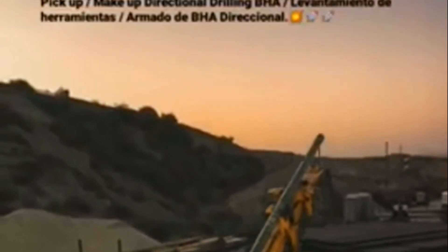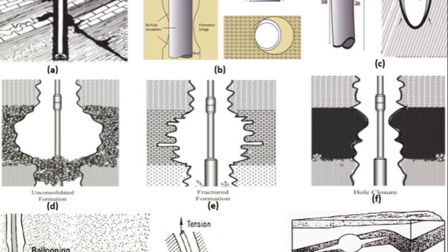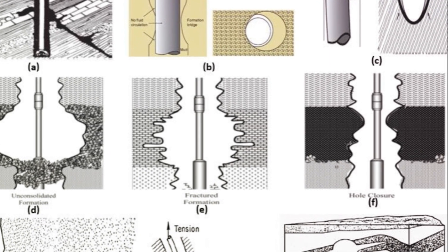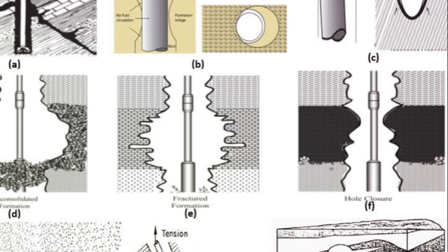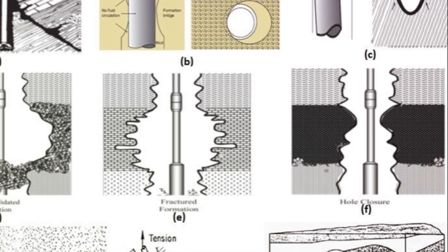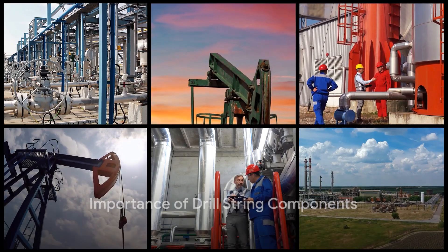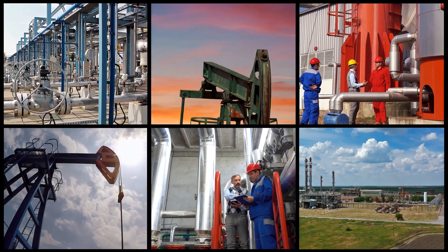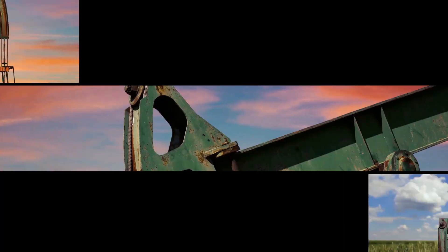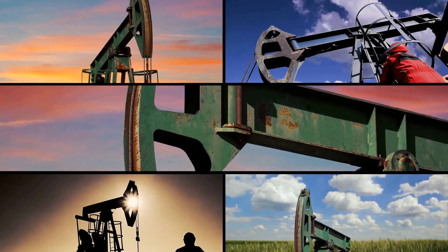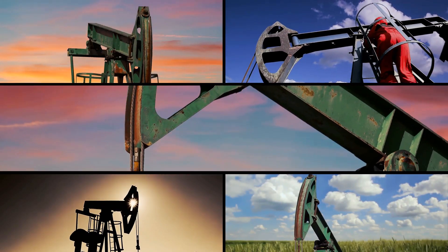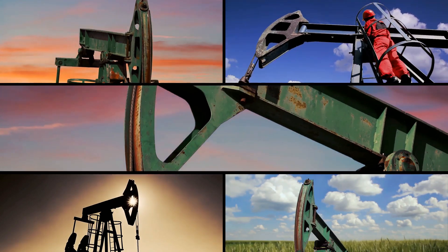The bottom hole assembly consists of various components like the drilling bit, stabilizers, reamers, jars, and shock subs — all crucial for breaking rock formations, centralizing the drill string, and minimizing drilling issues. Its design must consider factors like total depth, hole size, and mud weight. Efficient drill string design is essential for delivering weight to the bit, providing strength under dynamic conditions, and minimizing hole stability issues. Factors like pipe weights, grades, and corrosive environments must be considered for successful drilling operations.